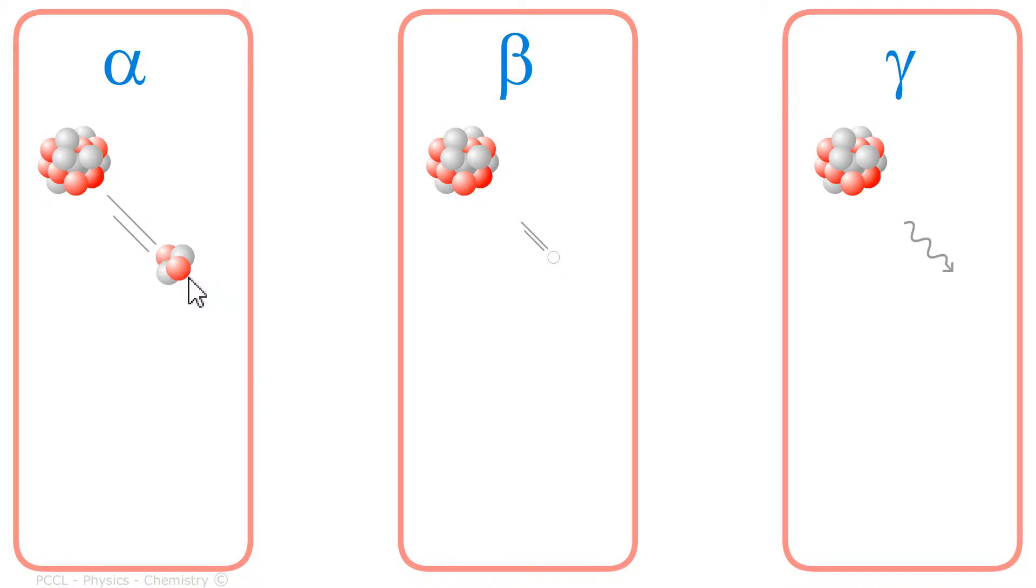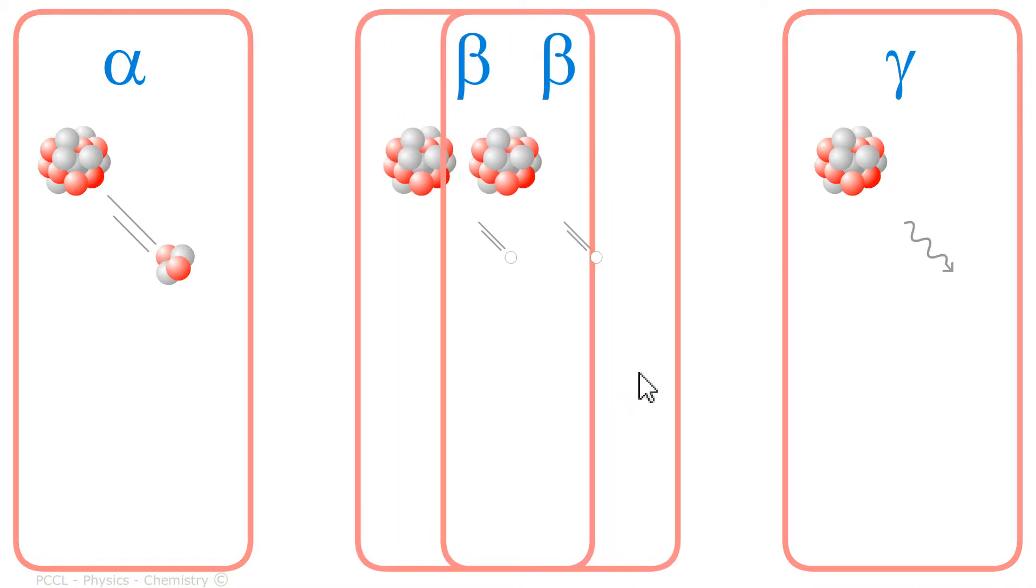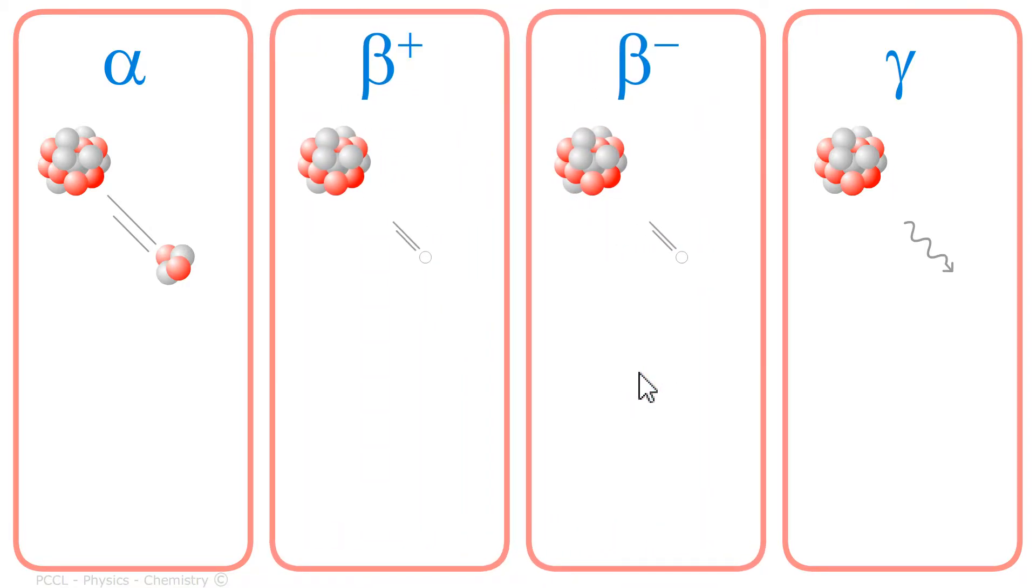There are 3 decay modes: alpha, beta, and gamma. We can even count 4 since there is beta plus and beta minus.